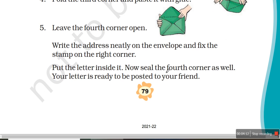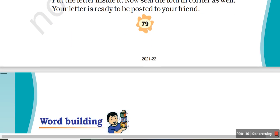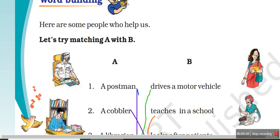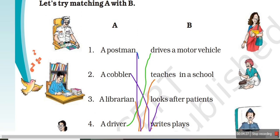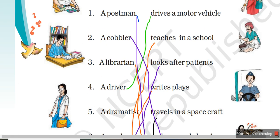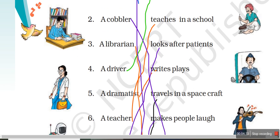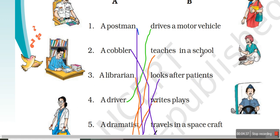Now write the address and give it to the postman. Next is Word Building. This is the last exercise of your poem — the matching part. What does the postman do? It brings letters. A cobbler will mend your shoes. A librarian works in the library. A driver is someone who drives any vehicle, a motor vehicle. And a dramatist means someone who writes plays — small, short plays.